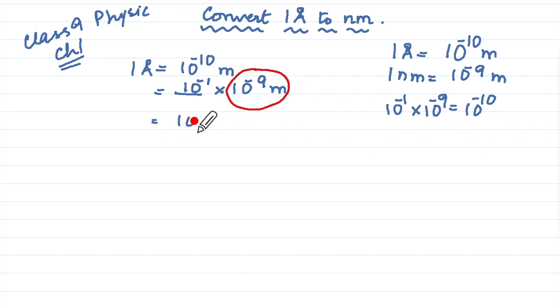So we will write 10 to the power minus 1, and this becomes nanometer. Why? Since 1 nanometer is equal to 10 to the power minus 9 meter.